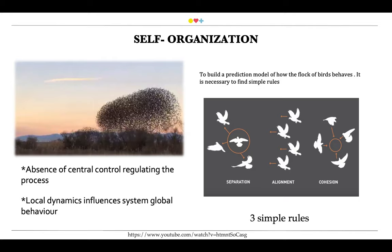As we can see with the birds, there are three simple rules, and to build a prediction model of how flocks of birds behave it's necessary to find those simple rules. Maybe here is a clue that could help us find sports rules — what are the rules related to interactions between biomechanical risk factors, social risk factors, and physical risk factors? For example, mechanical energy flow could be one rule, and we need to think about different rules.